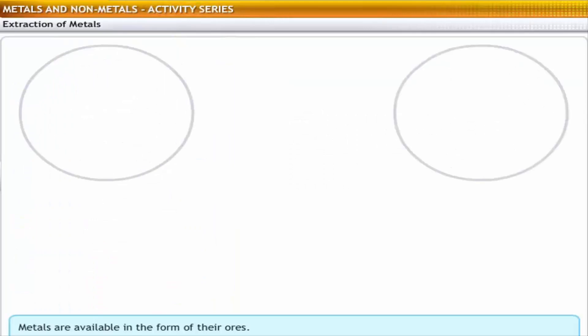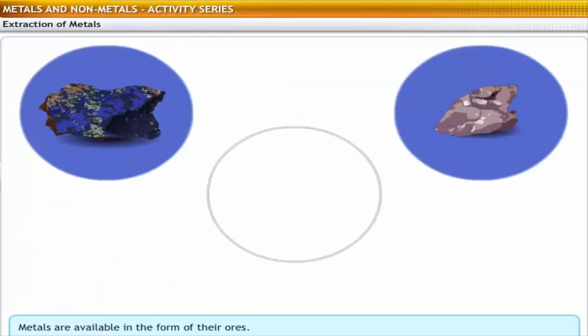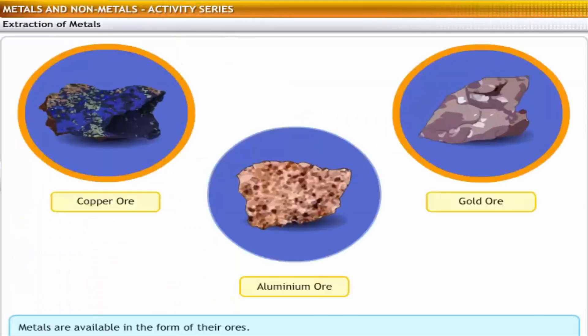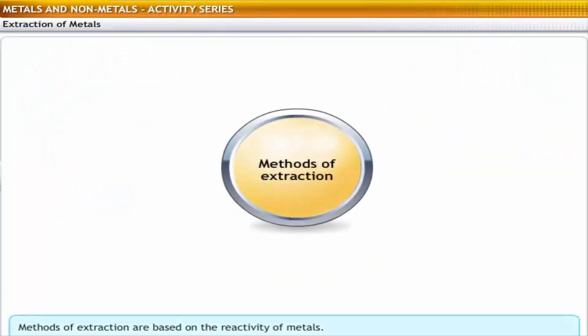A number of metals are available only in combined forms as ores. To obtain the pure forms of these metals, we need to extract them from their respective ores. Based on the reactivity displayed by metals, they can be extracted through the following methods.